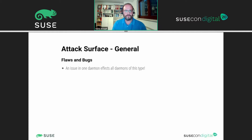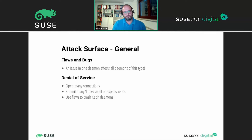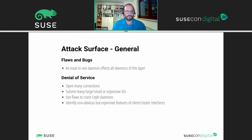In general, we have the topic of flaws and bugs with Ceph. If you have an issue in Ceph itself and one daemon, it affects all daemons of that type — and possibly other ones too. You could have denial-of-service attacks by opening many connections to Ceph, or submitting very many, large, small, or otherwise expensive I/O operations to bring the cluster down. You could use flaws in Ceph to crash daemons or identify non-obvious but very expensive features in Ceph interfaces which could cause high-impact load on your cluster.